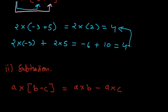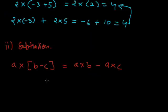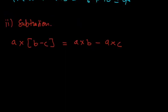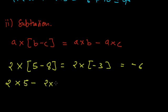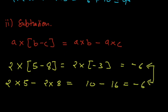We also have the distributive property over subtraction. If A is multiplied by (B minus C), it equals A into B minus A into C — A is distributed over B and C, which is why it is called the distributive property. For example, 2 into (5 minus 8) equals 2 into minus 3 equals minus 6. Applying distributive property: 2 into 5 minus 2 into 8 equals 10 minus 16 equals minus 6. Both values are the same, so distributive property is also applicable over subtraction.